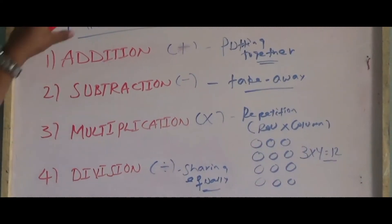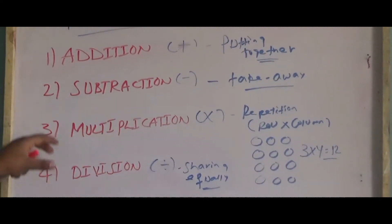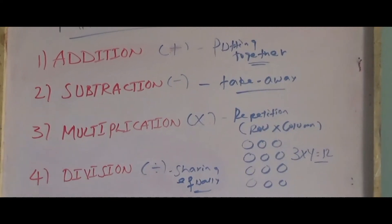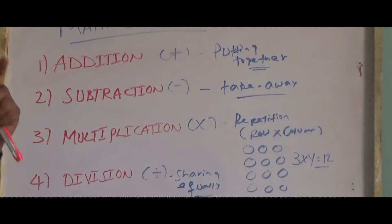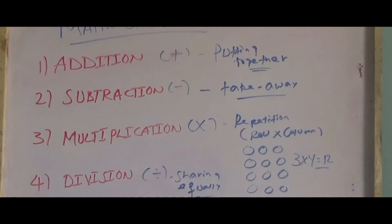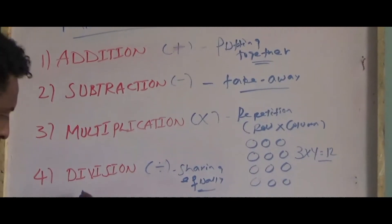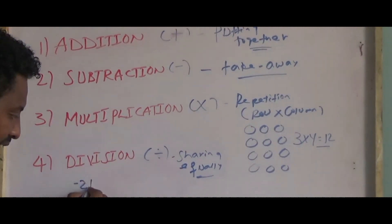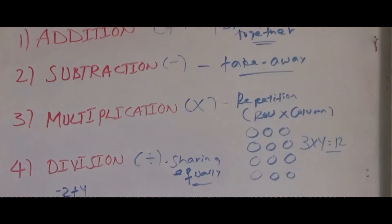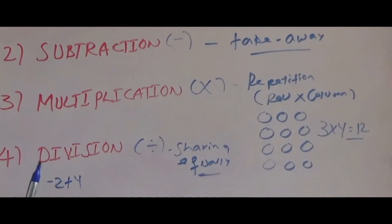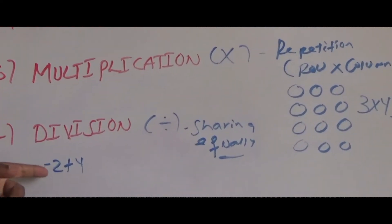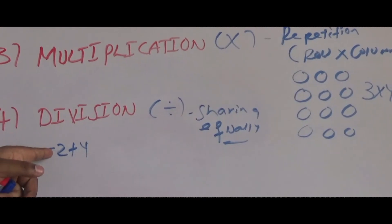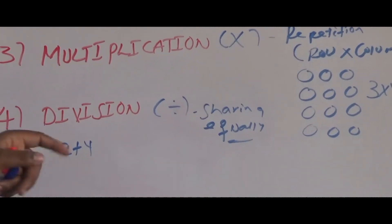If you look at the negative, you will see the math operation. For example, negative 2 plus 4. One thing is that always the sign comes before the number — the sign comes before the number.